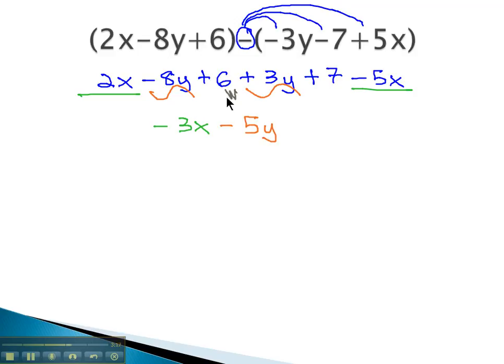Finally, 6 and 7 gives us positive 13, and we get our final answer when we subtract these two polynomials.